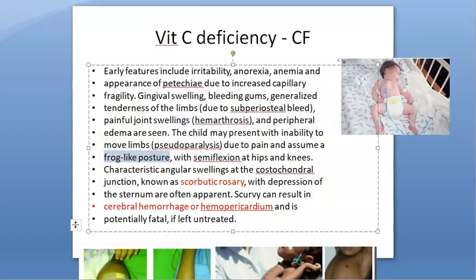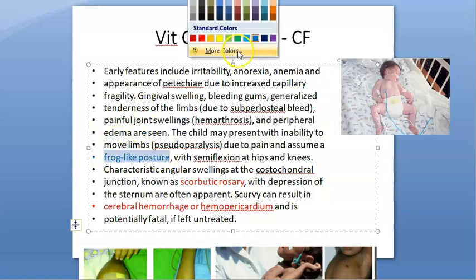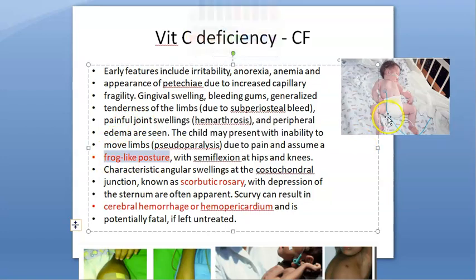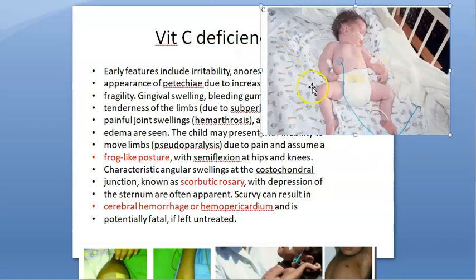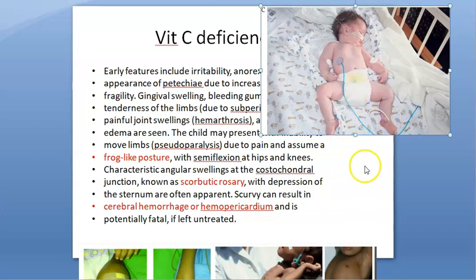There is also frog-like posture of the limbs because the joints are affected. Vitamin C helps in osteoid formation and osteoblast activity, so there is semi-flexion at hips and knees producing a frog-like position.